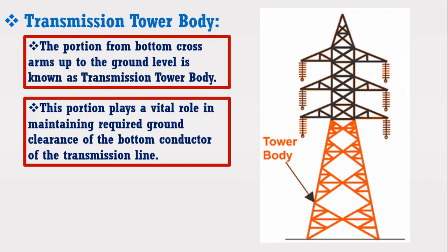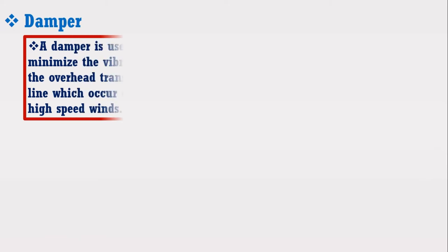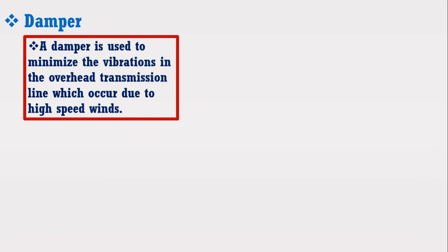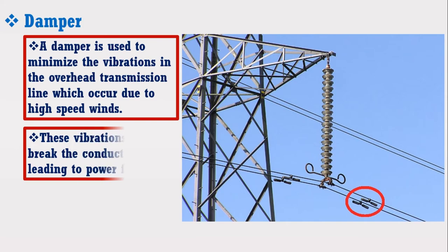Now I am going to discuss about the dampers in the transmission line. A damper is used to minimize the vibration in the overhead transmission line which occurs due to high-speed winds. These vibrations may break the conductors, leading to power failure.